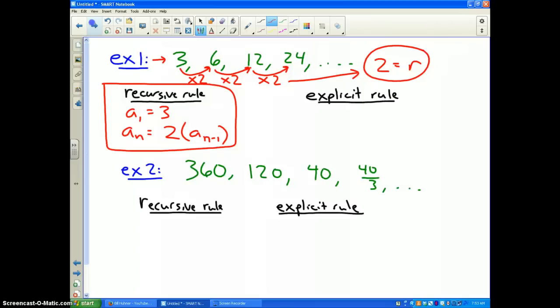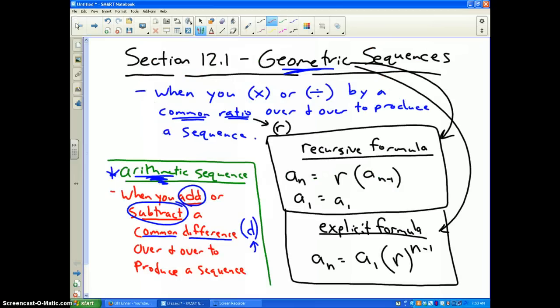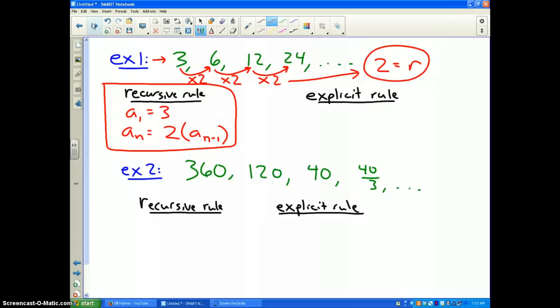The explicit rule. If I go back a slide, I need the first term and I need the common ratio. Well very simply, the nth term is equal to the first term 3 times the common ratio 2 to the n minus 1 power. That's it. Now I can prove that. Let's say we wanted to figure out the fourth term in our pattern.